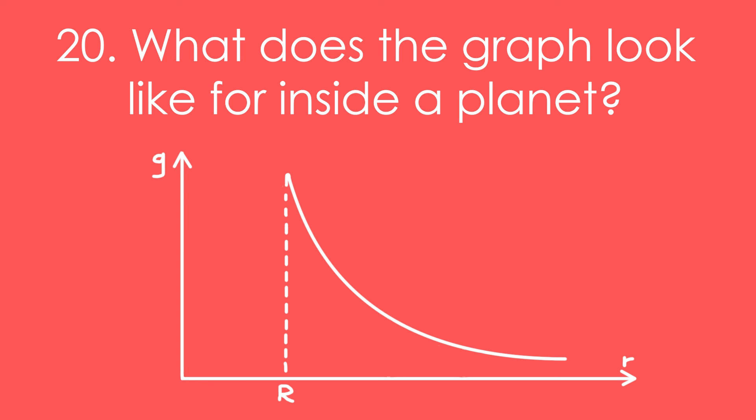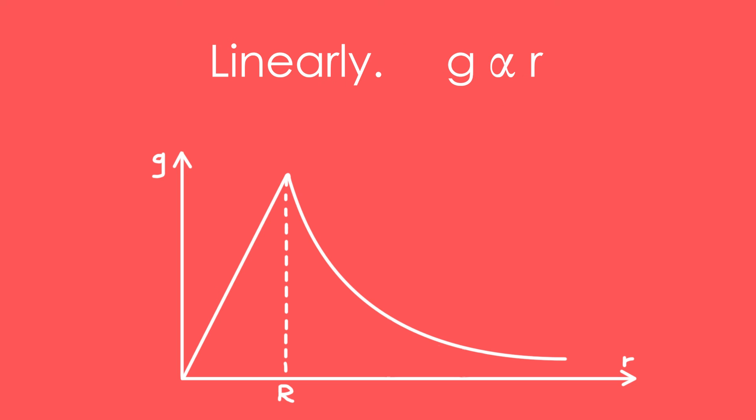Twenty, what does this graph of g against r look like for inside a planet? It's linear because g is proportional to r. We know it has to be zero at the center because you're being pulled in all directions equally.